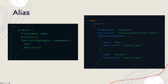Once you call this you will see that the response is going to look different — instead of name it will say product name, and instead of components it will say important components. This comes from the alias feature and you can use it when your client is looking for a response with a particular field name, which is pretty cool.